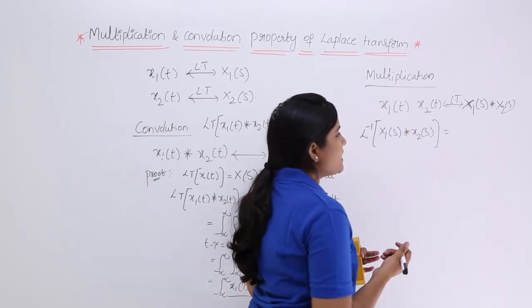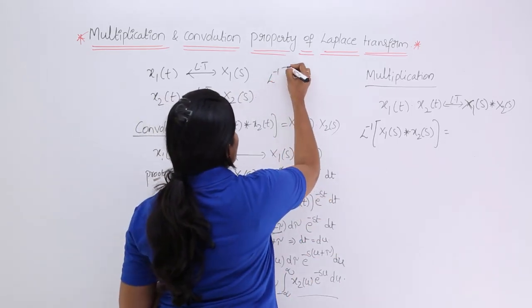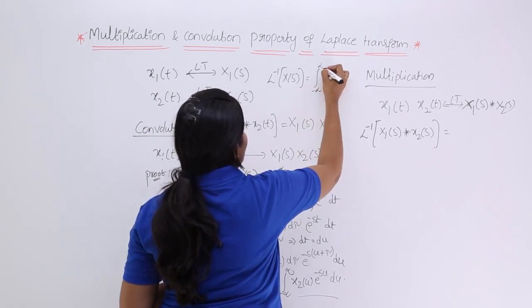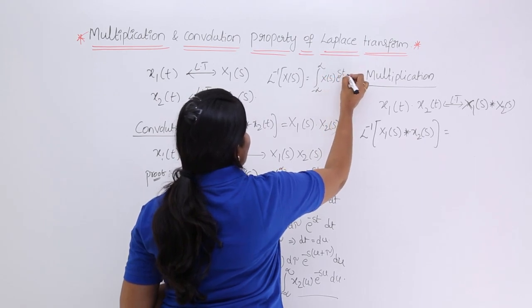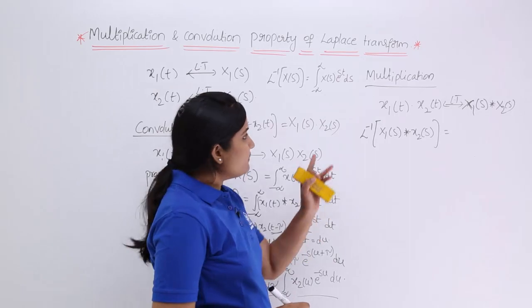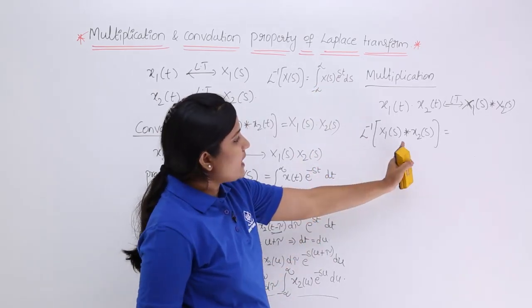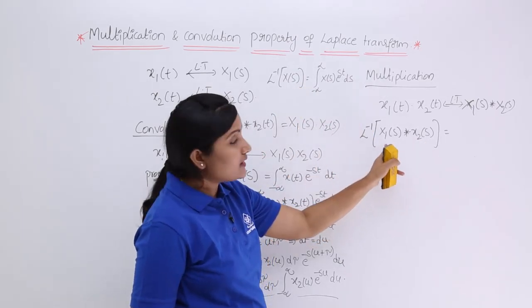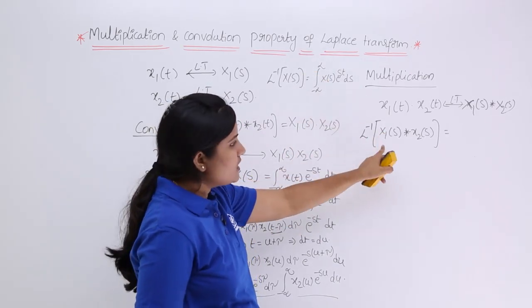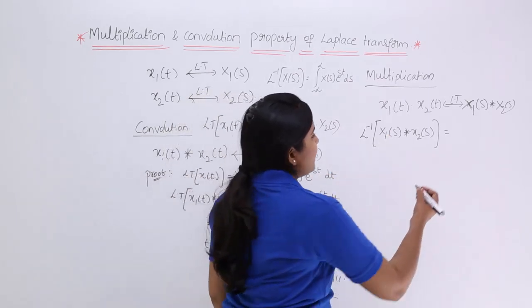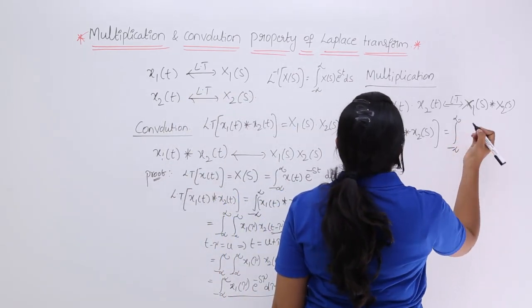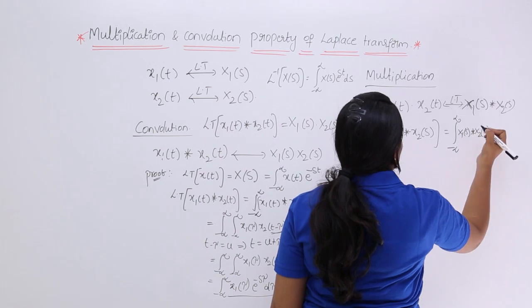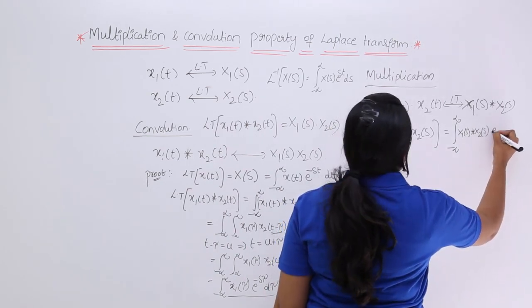You know the general inverse Laplace transform equation: the inverse Laplace transform of x of s equals the integral from minus infinity to infinity of x of s times e to the power st ds. I am applying this same equation here. In place of x of s, I am substituting x1 of s convolved with x2 of s, giving the integral from minus infinity to infinity of [x1 of s convolved with x2 of s] times e to the power st ds.